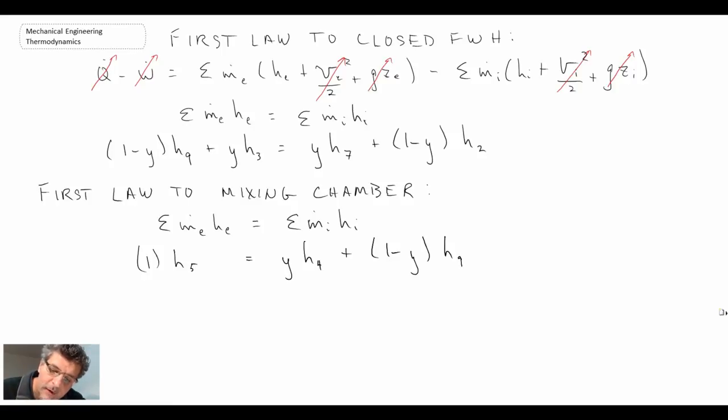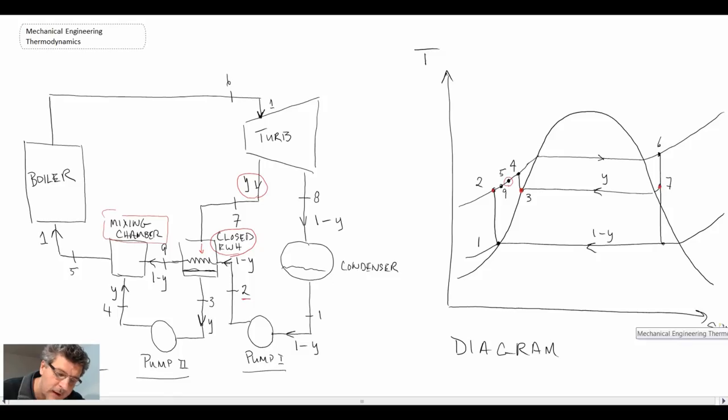Now, sometimes what we do is we can get away without having to have pump number 2 by using what is called a trap. And when you use the trap, instead of sending the fluid through pump 2, what you do is you send it through a throttling valve whereby the fluid pressure drops down to the condenser pressure.